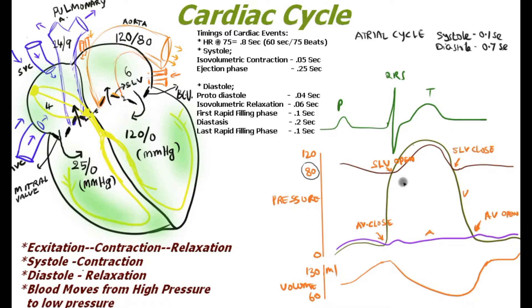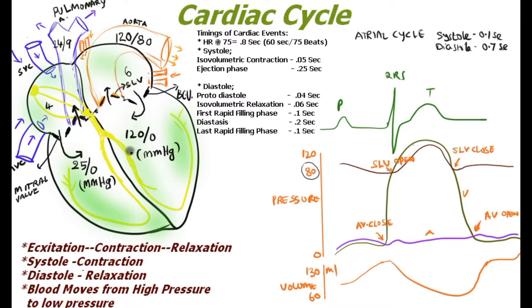The ventricular ejection phase lasts around 0.25 seconds. The blood volume curve shows that blood filled during atrial systole drops from around 130 ml down to 60 ml during ejection. Once the ventricle finishes its contraction, it must relax again.